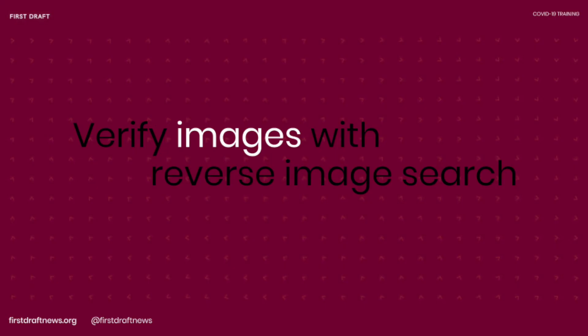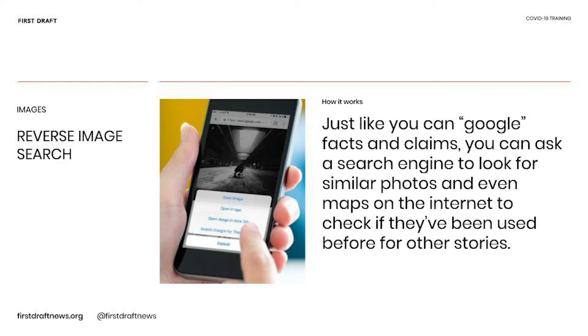One of the quickest ways that we can verify information that we find on social media is by doing something called reverse image search. Just like you can type a question into Google or your favorite search engine to see if it's been published before, you can ask search engines to look at a photo that you upload, find similar photos elsewhere on the internet, and see if it's been published before — or find others that look like it to help you piece the puzzle together.